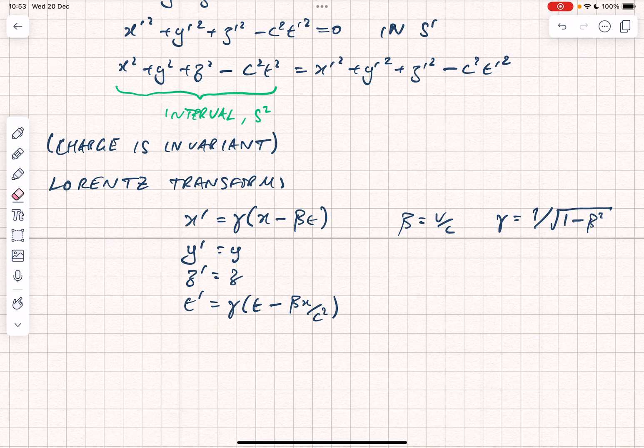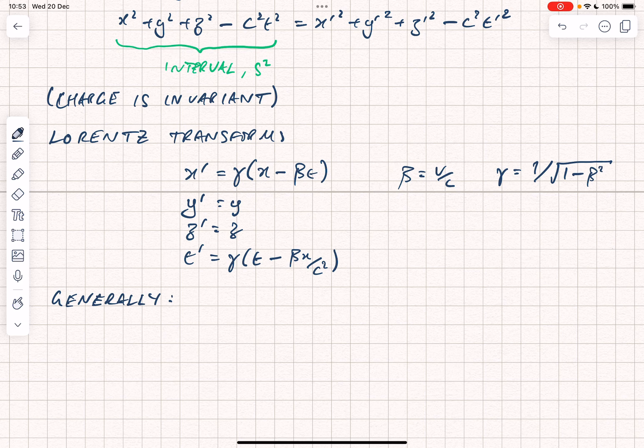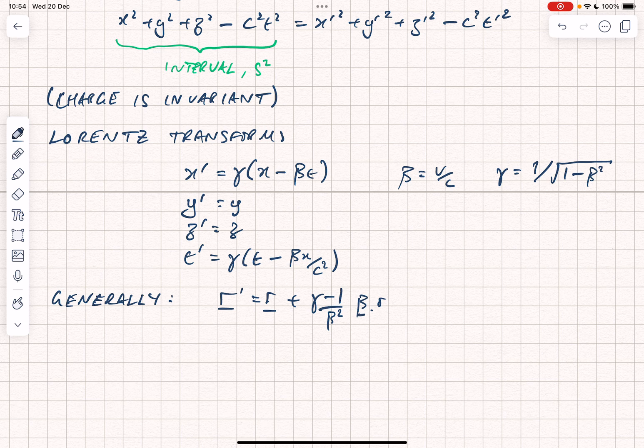You can write them more generally if you want to. So if you wanted to write them more generally in terms of two frames which are moving with different velocities, i.e. not just along one axis, then you would write the following. I'm going to use r here to mean the vector x, y, z. So r prime is given by r plus gamma minus 1 over beta squared, beta dotted with r in the beta direction, minus gamma ct beta.